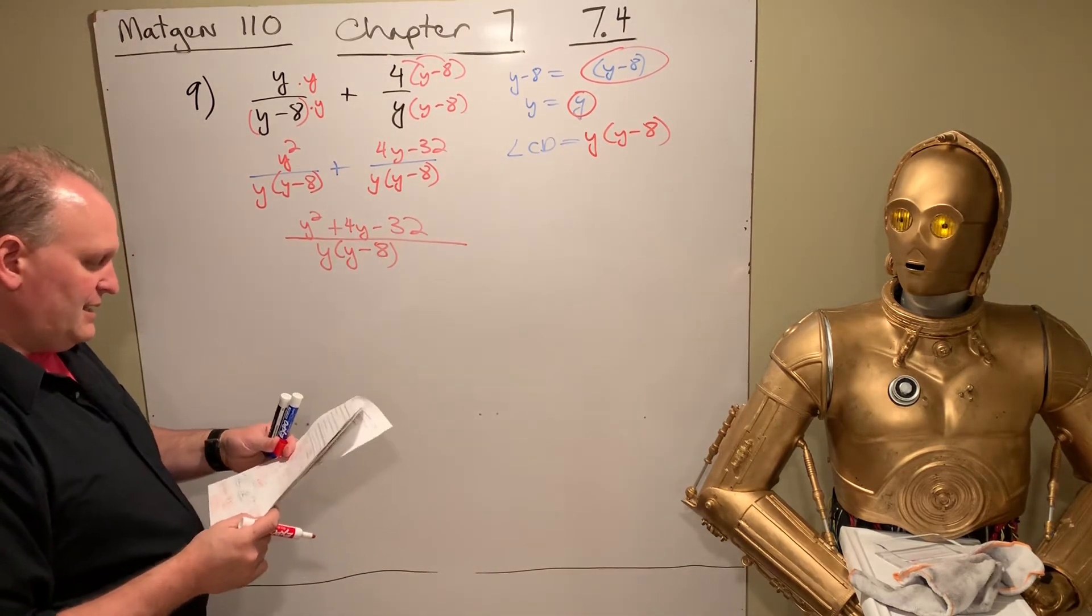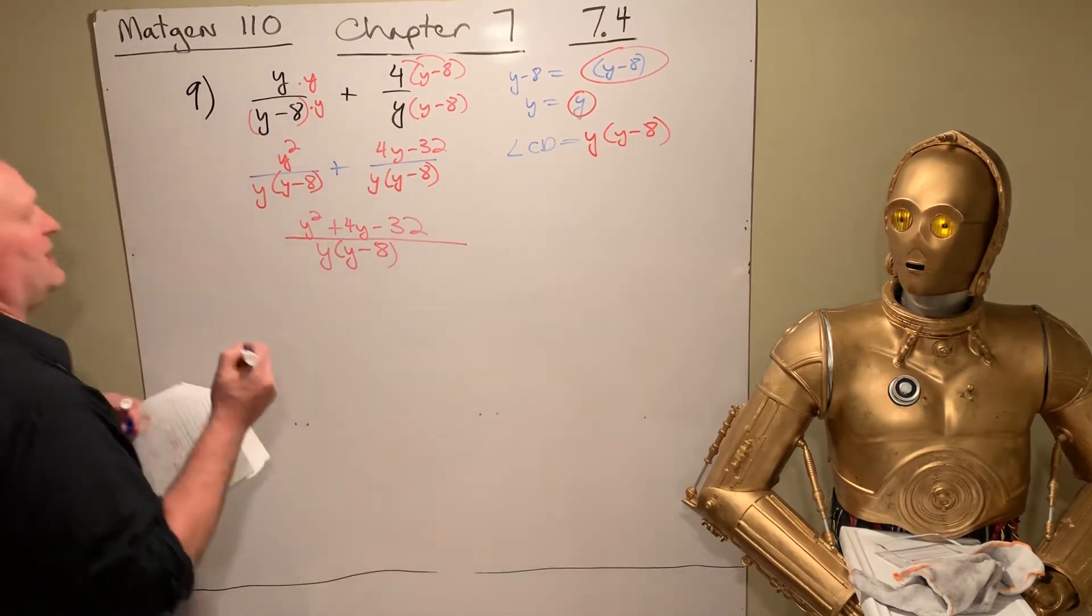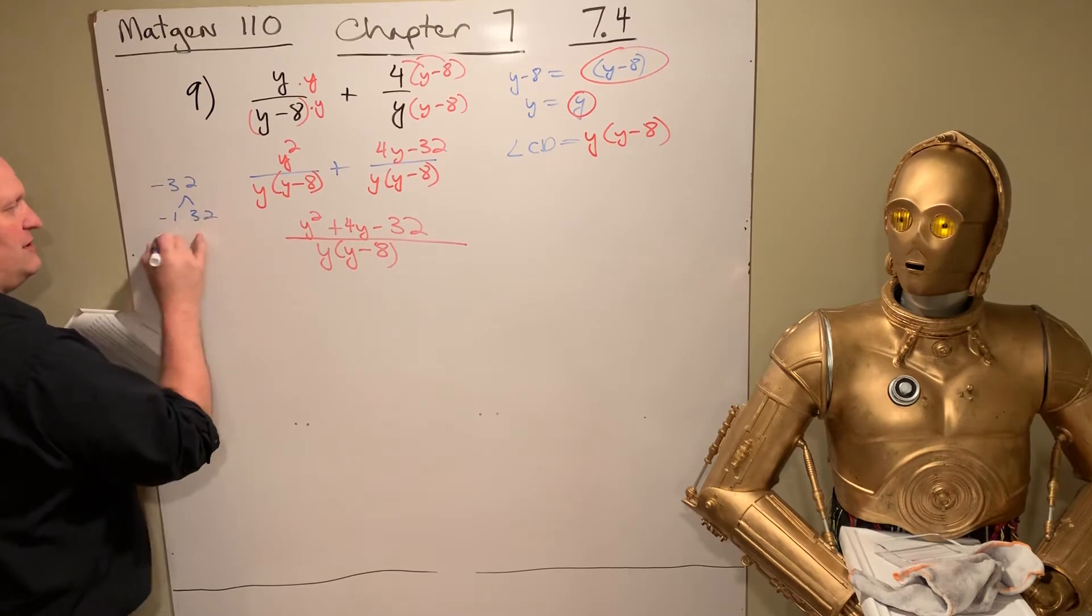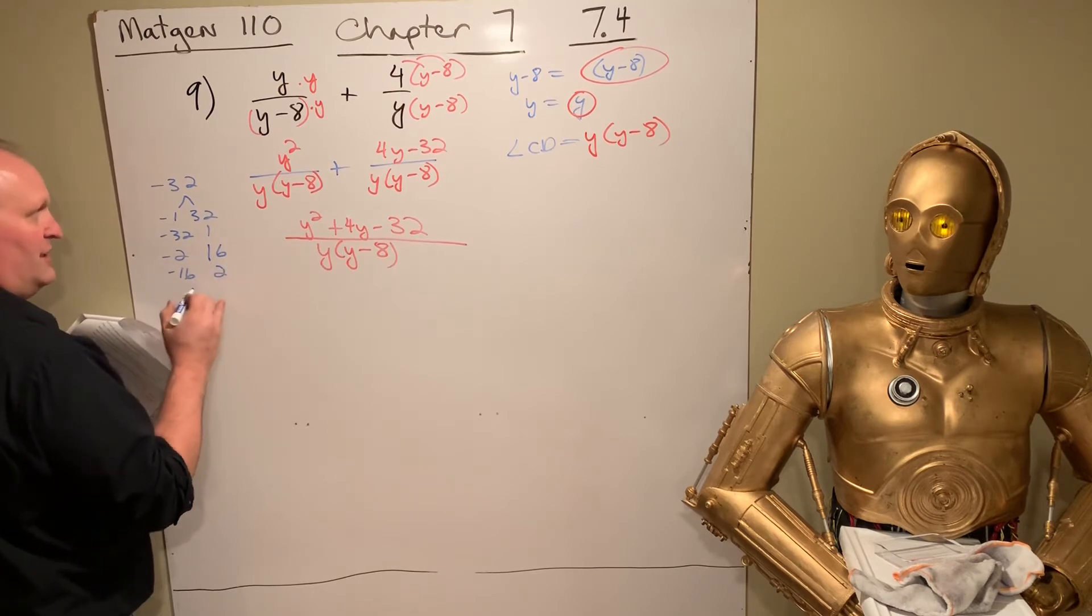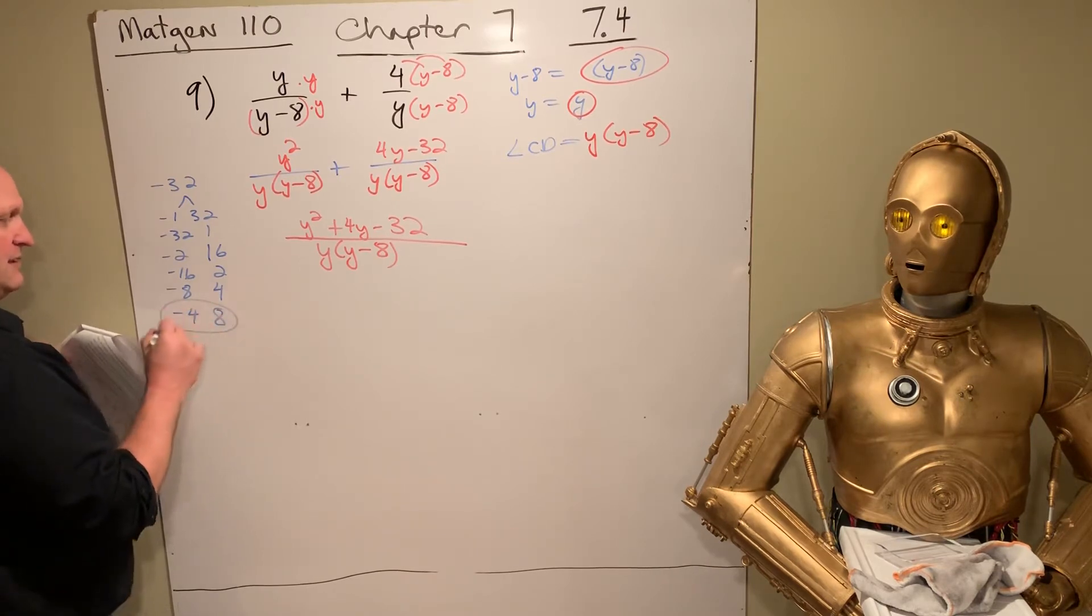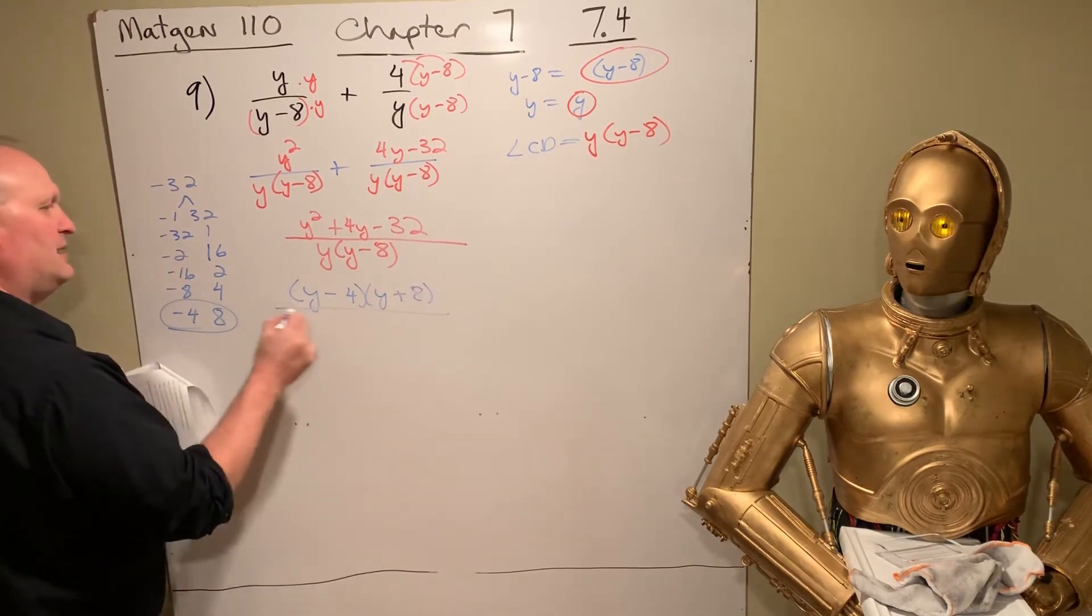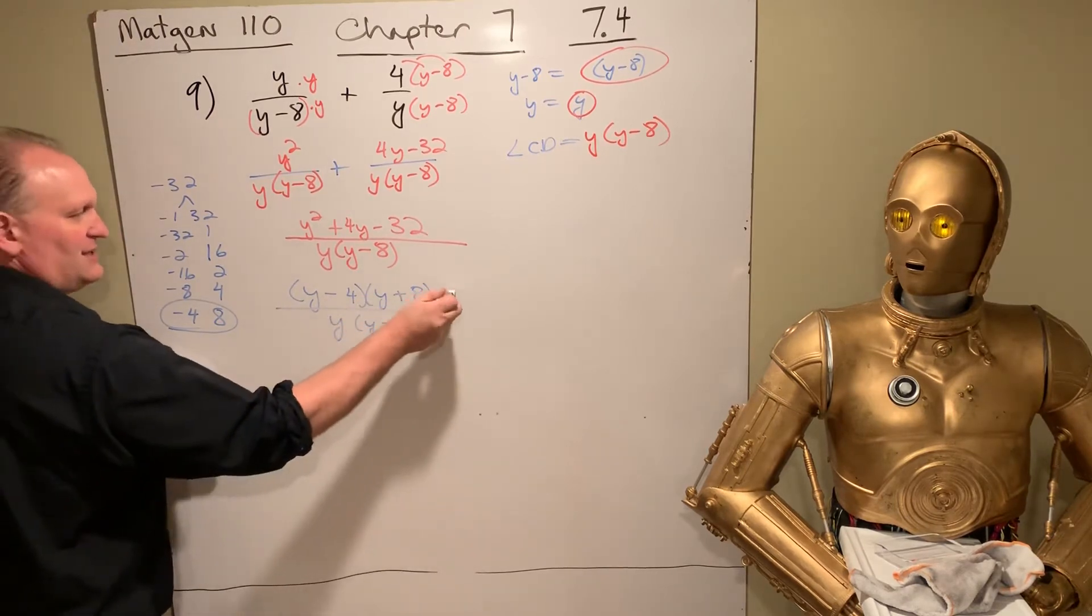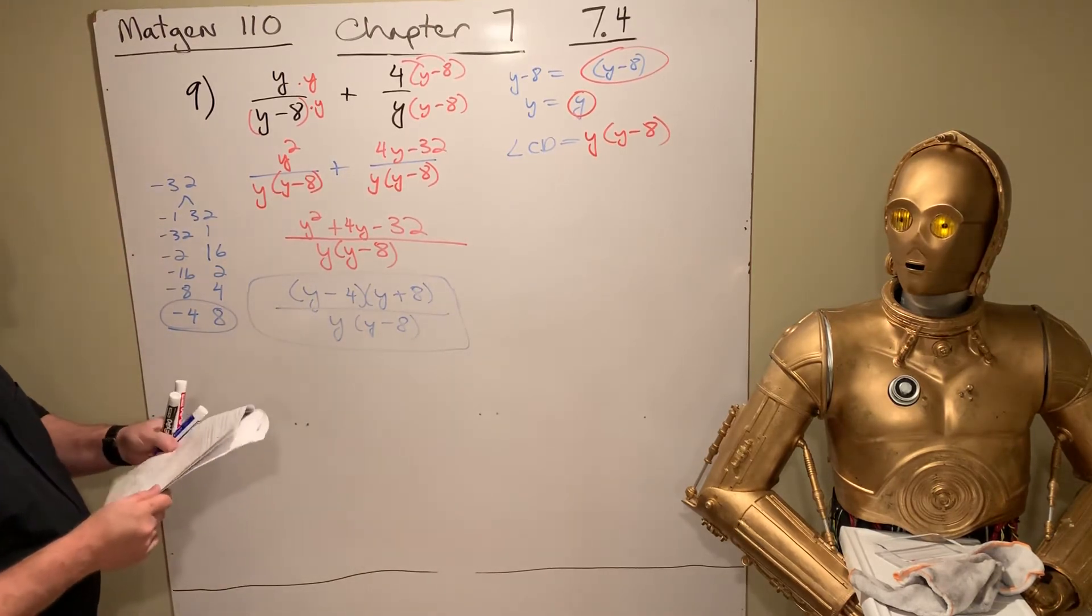Y minus 32. And I think we can factor that. But I don't know if we're going to be able to cancel anything. So think of things that multiply to be negative 32 that add up to 4. Negative 1 and 32. Negative 32 and 1. Negative 2 and 16. Negative 16 and 2. Negative 8 and 4. Negative 4 and 8. There it is. So we got Y minus 4, Y plus 8 over Y times Y minus 8. Yeah, close but no cigar. Those are conjugates. So I can't cancel them off. It just stays just like that.